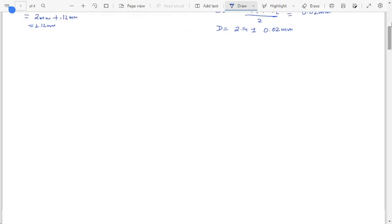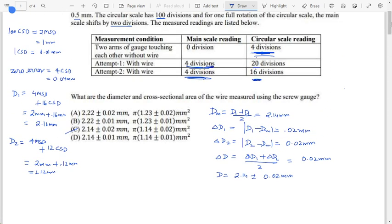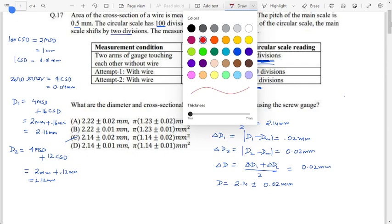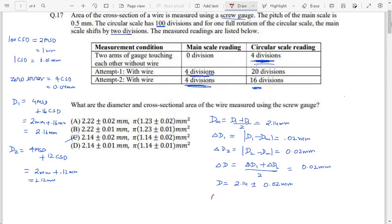So first let us calculate the mean area. So area can be found out using pi D square by 4. So mean area will be pi into 2.14 square upon 4. So when you solve this, you will get this as 1.14 pi. This is the mean value of the area.